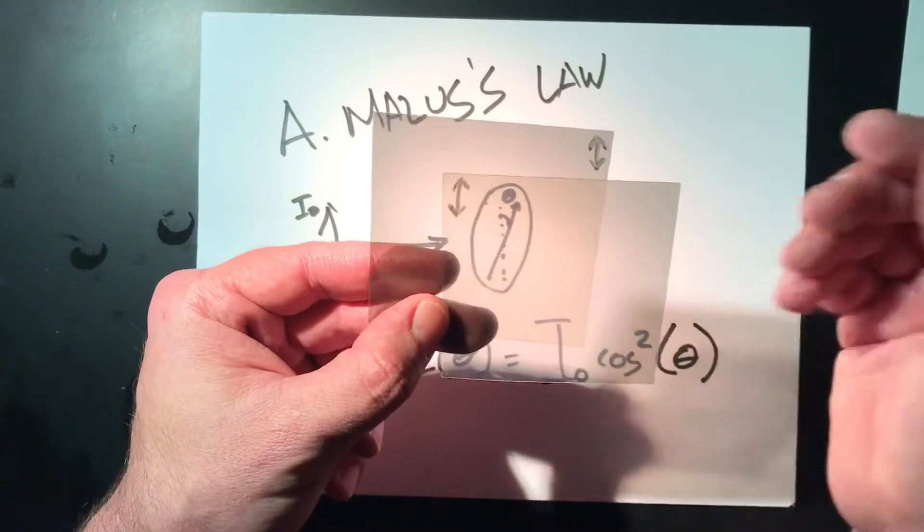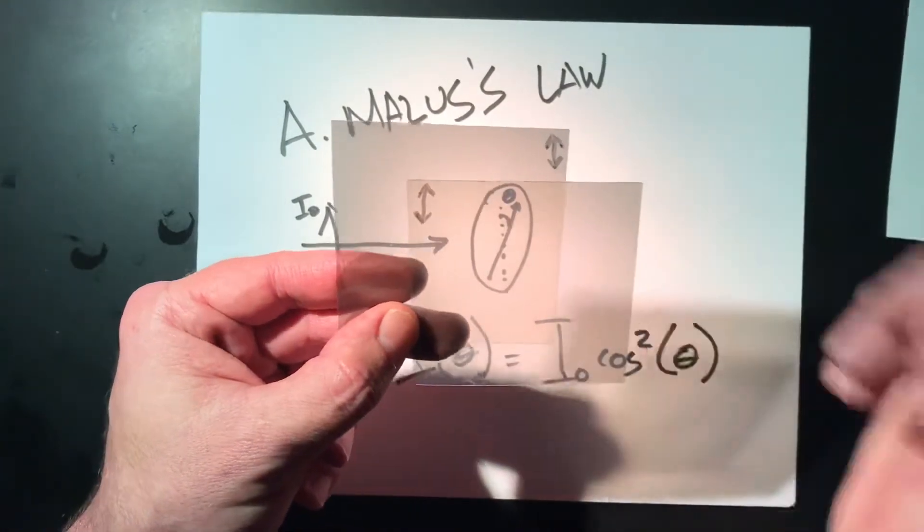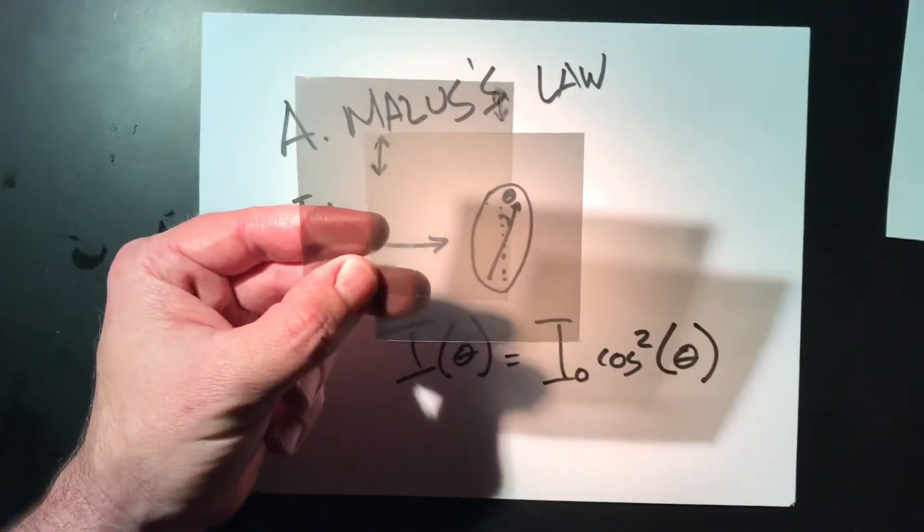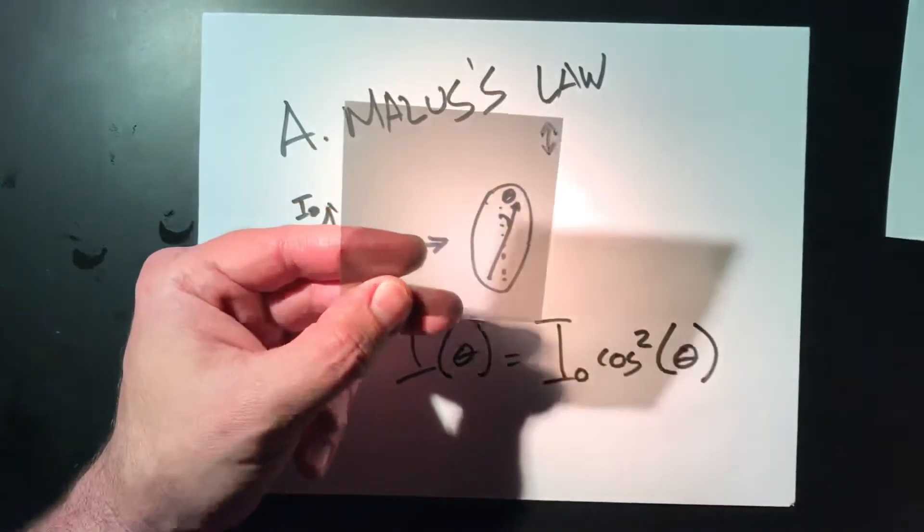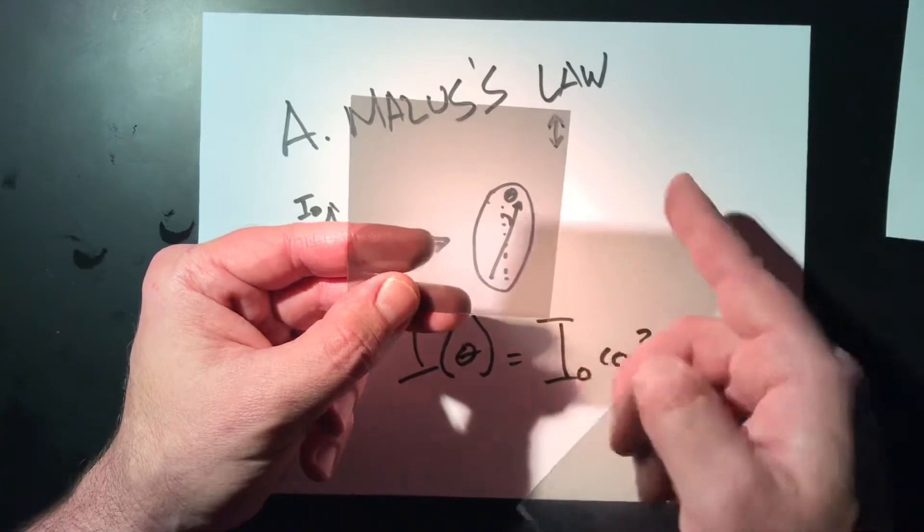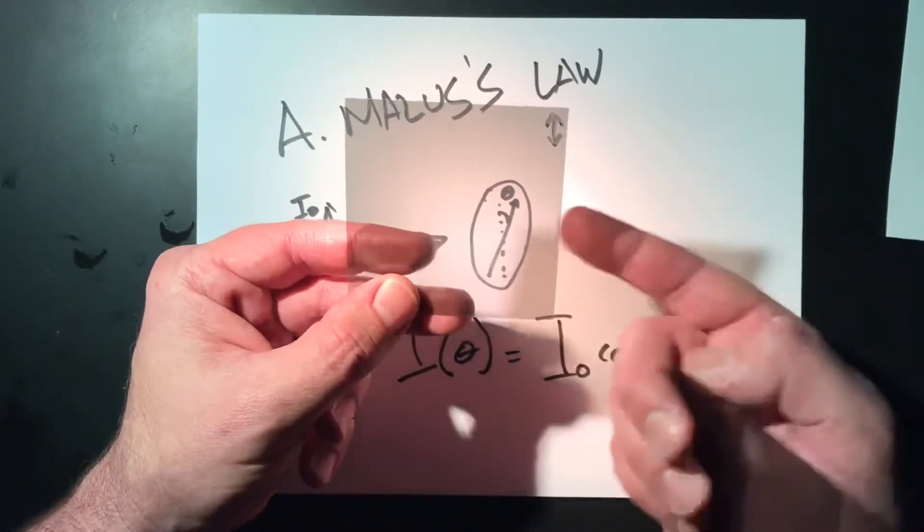If I line them up, nearly everything gets through. The polarizers aren't perfect, so there's a little bit of loss. Even just going through one polarizer, you can see this is a little darker than the paper behind it, so there's a little bit of light that doesn't make it through.